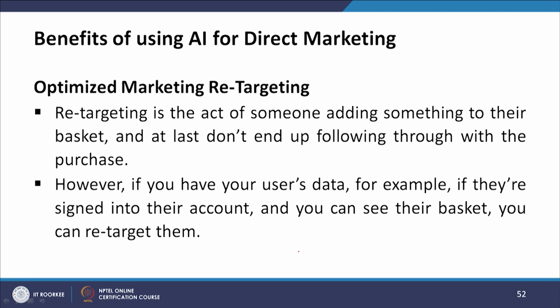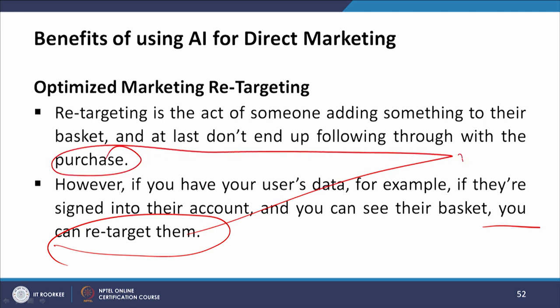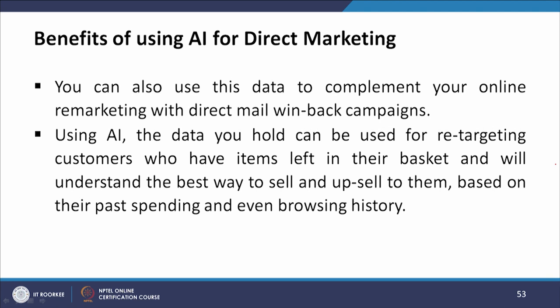The next benefit of using AI for direct marketing is optimized marketing retargeting. Retargeting is the act of someone adding something to their basket but not following through with the purchase. However, if you have the user's data — for example, if they are signed into their account and you can see their basket — you can retarget them so they make a purchase. You can also use this data to complement your online remarketing with direct mail win-back campaigns. Using AI, the data you hold can be used for retargeting customers who have items left in their basket, understanding the best way to sell and upsell to them based on their past spending and browsing history.